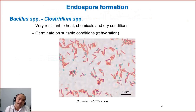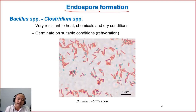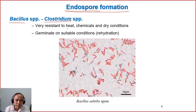Some species of bacteria can produce spores, called endospores, meaning spores inside the cells. Bacillus and Clostridium are two species of bacteria which can produce spores.